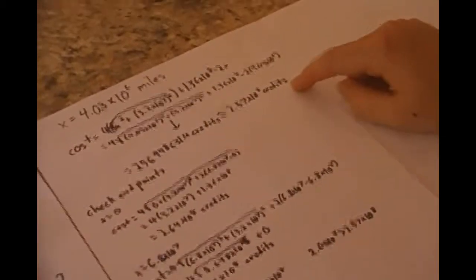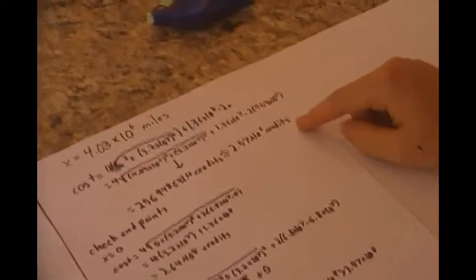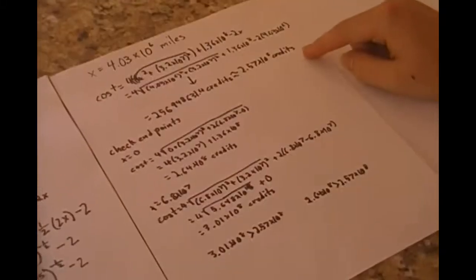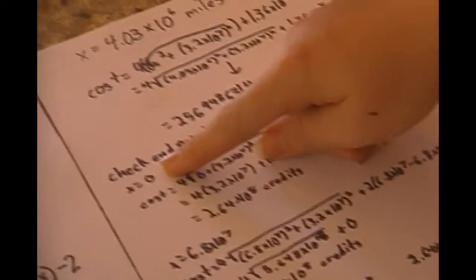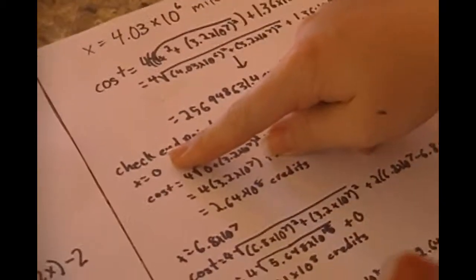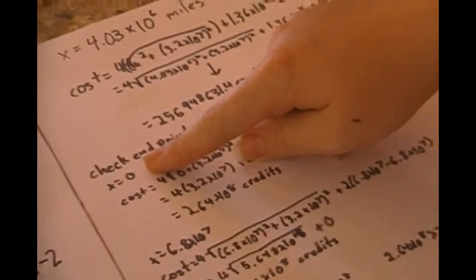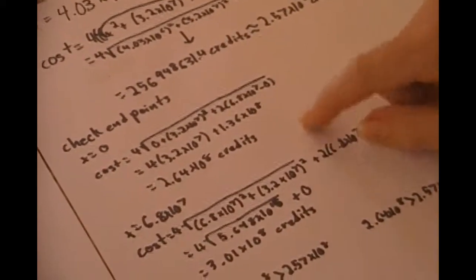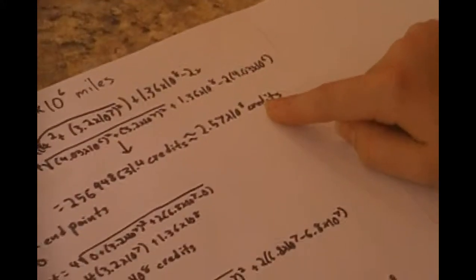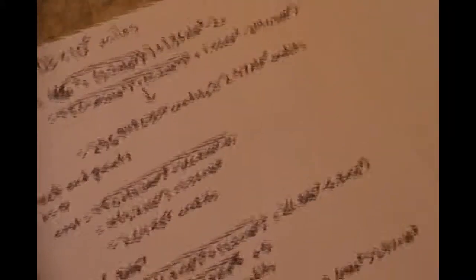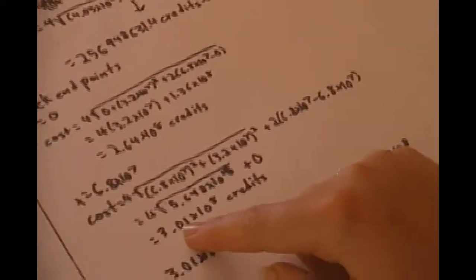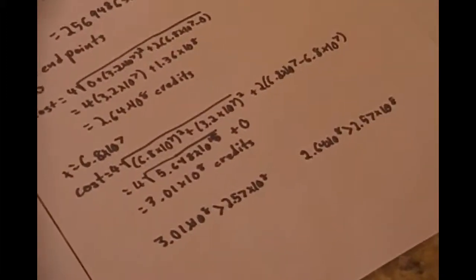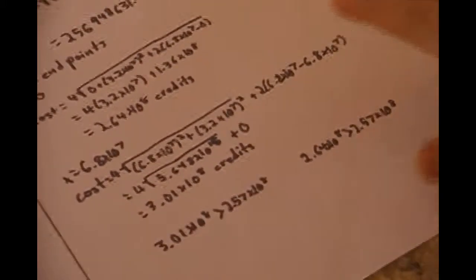So, this is going to be the total cost for our x course. Then we check the endpoints to make sure nothing costs less. If we were to travel directly through the asteroid belt and then along open space without cutting through it at all, the total cost would be 2.64 times 10 to the 8 credits, which is greater than 2.57 times 10 to the 8 credits, which is the path we take for x. Then if we were to travel directly through the asteroid belt to planet calculus, our total cost would be 3.01 times 10 to the 8 credits, which will cost even more than the other possible endpoint path.